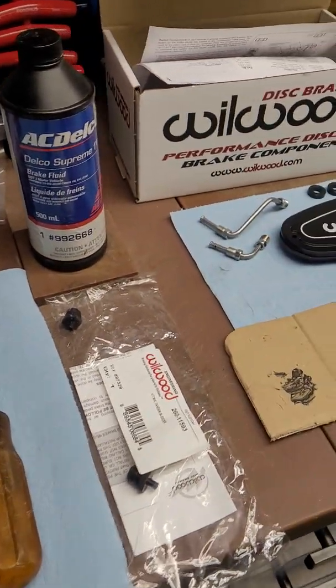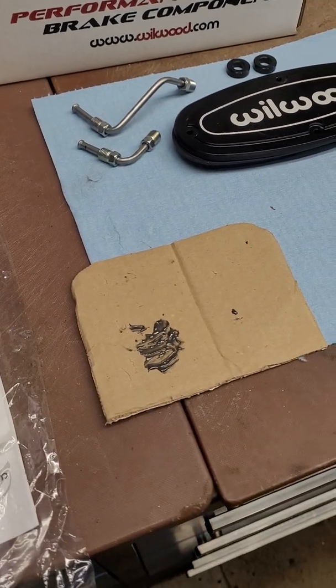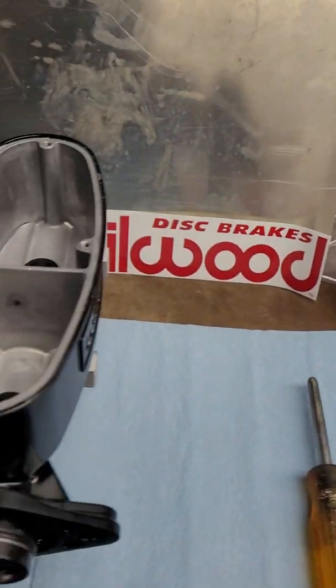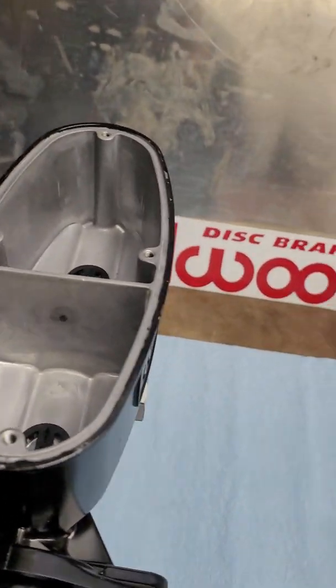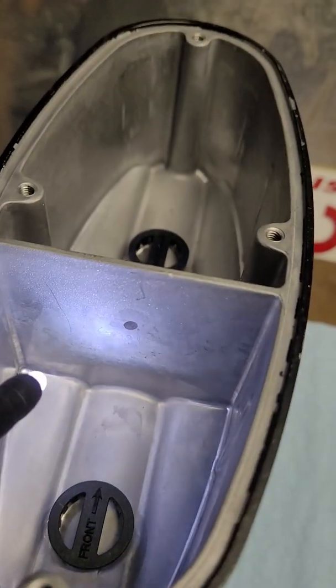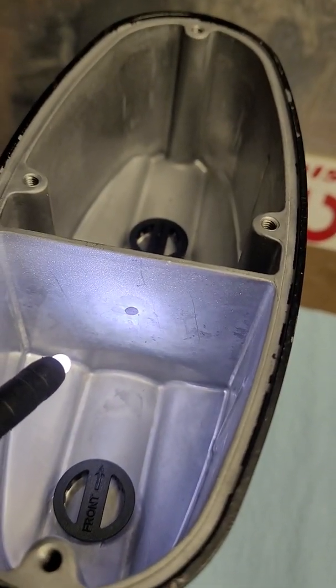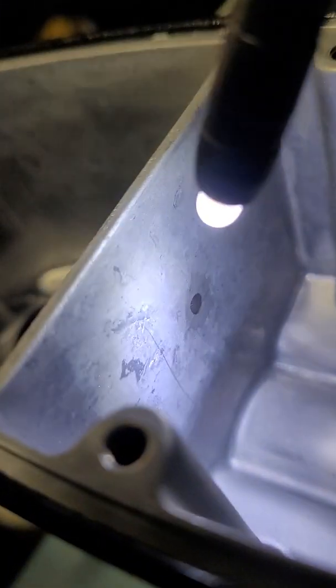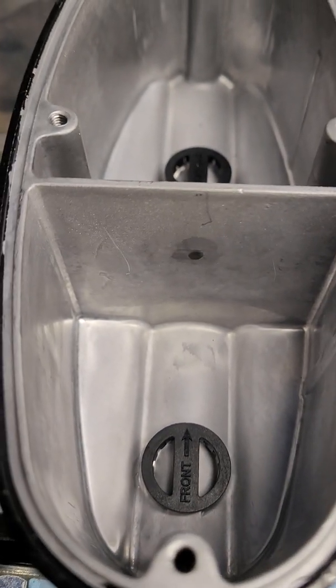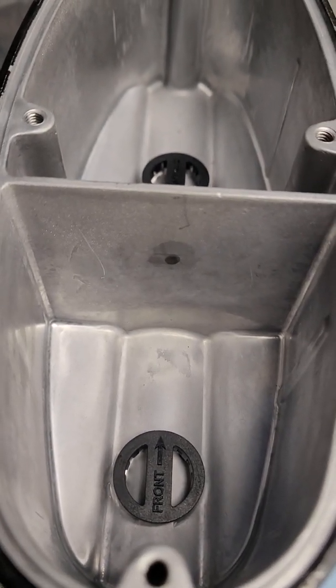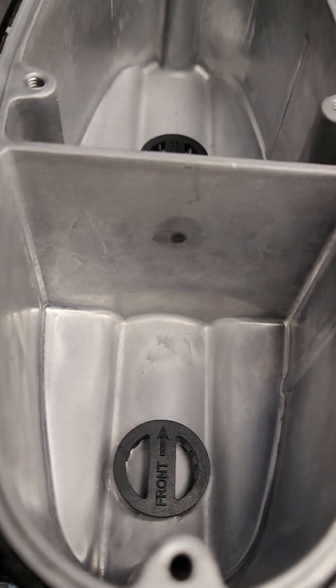They actually recommend just using some JB Weld. I mixed up some JB Weld and applied it right there. There's a little round circle there that goes from both sides. What I did is just stuck some JB Weld inside of there, took a little razor blade, and just smoothed it off so it's nice and clean in there, and let that cure.